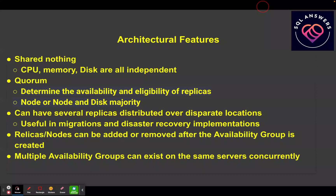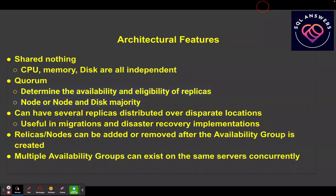Quorum is primarily going to be pinging your primary and making sure it's online and able to serve users. If it detects a problem, it can be configured to do an automatic failover. Quorum can be configured to use node or node-and-disk majority, so you want to have an odd number — that's why you have the option of adding a file share witness to break a tie. And your replicas can be distributed over disparate locations, so you don't have to have all servers in the same data center or even the same country.